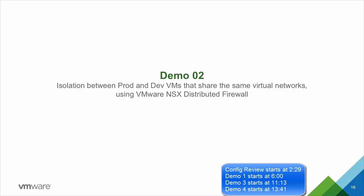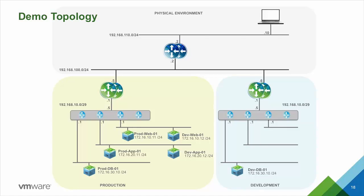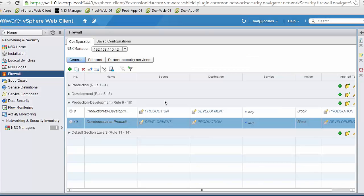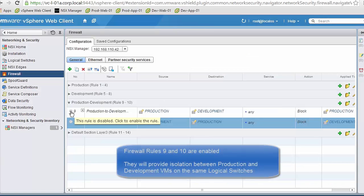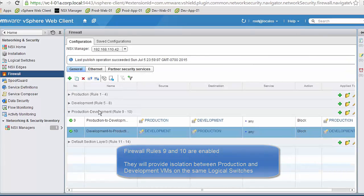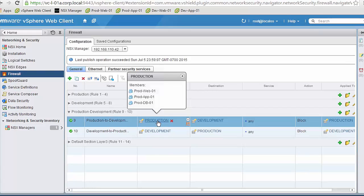In the second demo we will see how to provide isolation using the NSX distributed firewall. We move the web and app development VMs into the production switches and see how the NSX distributed firewall keeps them isolated. We start by enabling rules 9 and 10 on the firewall — these are the rules that will provide isolation between production and development VMs on the same subnets.